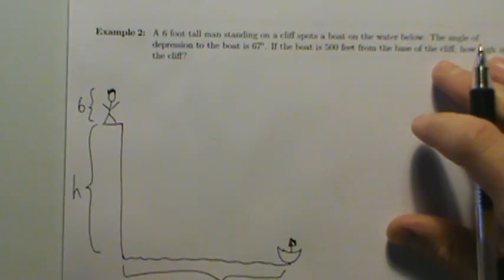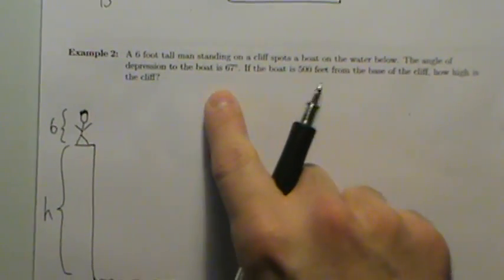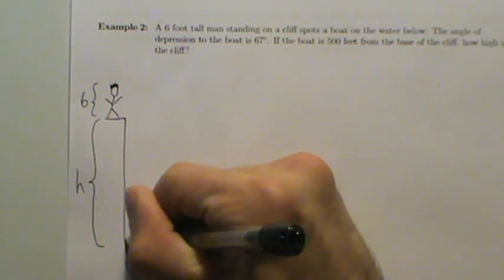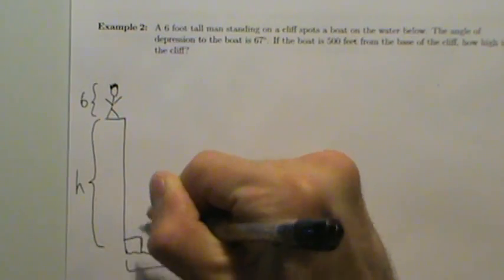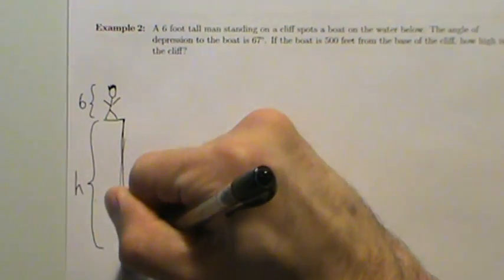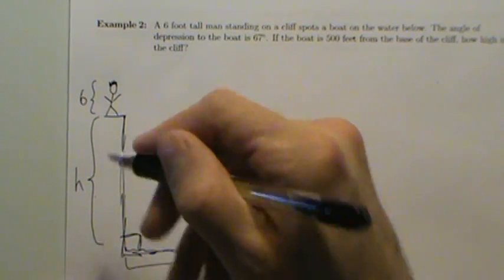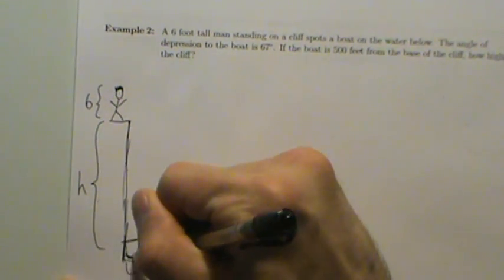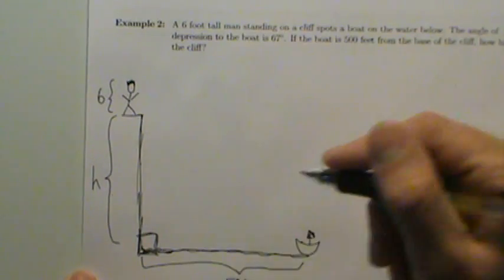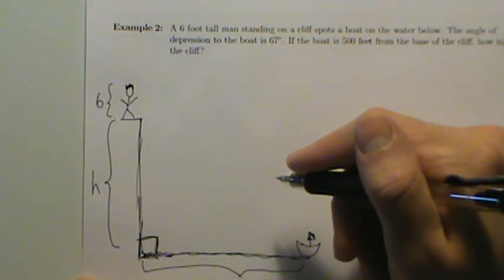We have to be careful. What we have so far is some pieces of a right triangle, because this right here is a right angle — the cliff is just going to go straight down. We can safely assume that, because we're not told otherwise and we are dealing with applications of trig. So, right angle here.